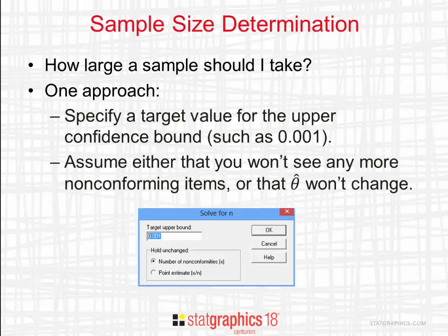In StatGraphics 18, this is done by filling out a dialog box. You specify the target upper bound for your confidence bound, and then you tell it to hold unchanged either the number of non-conformities X, or the point estimate X over n, which is theta hat.